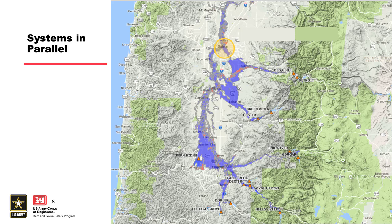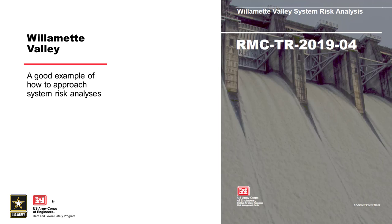Here's an example of a system in parallel — the Willamette Valley in the Pacific Northwest. We have all these different dams: Big Cliff, Detroit, Green Peter, Foster, Blue River, Cougar — all on different river systems, but they all lead to Salem, Oregon. This inundation map shows what the effects of breaches of these structures would be. We ask ourselves: what risk does Salem feel? This document, RMC Technical Report 2019-04, is a good example of how to approach system risk for the Willamette Valley and is available on the RMC website.